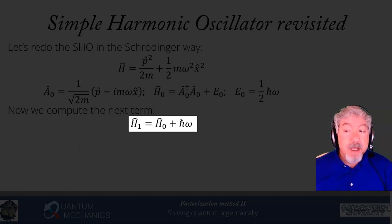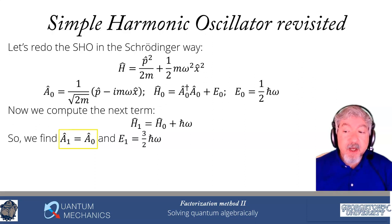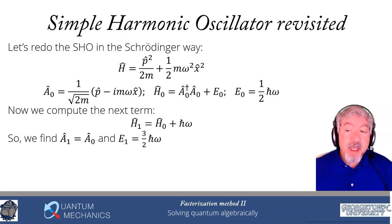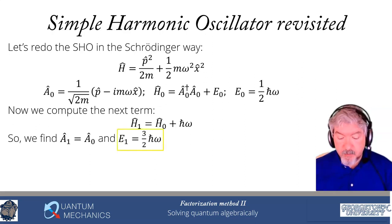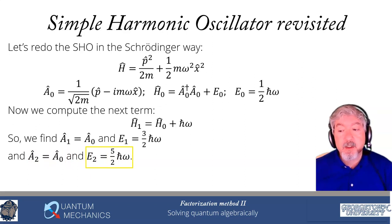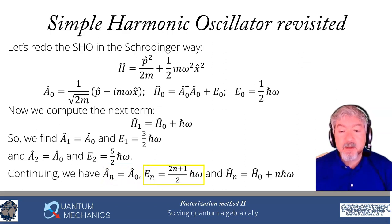So H1 = H0 + ℏω. The factorization is simple: A1 equals A0. Note this does not violate our rule — our rule was that A1 cannot equal A0†, and indeed it does not. Equaling A0 is allowed. This is the only case in factorization where the raising and lowering operators are the same for each index n. Because of the extra factor of ℏω, E1 = 3/2 ℏω, E2 = 5/2 ℏω. In general, An = A0, En = (2n+1)/2 · ℏω, and Hn = H0 + nℏω.